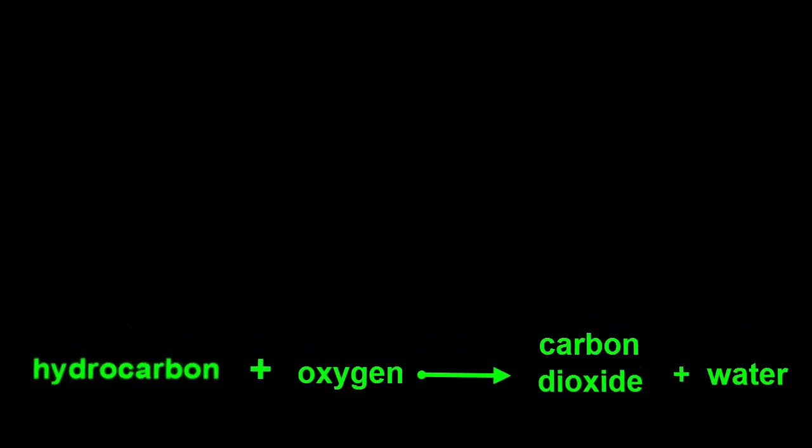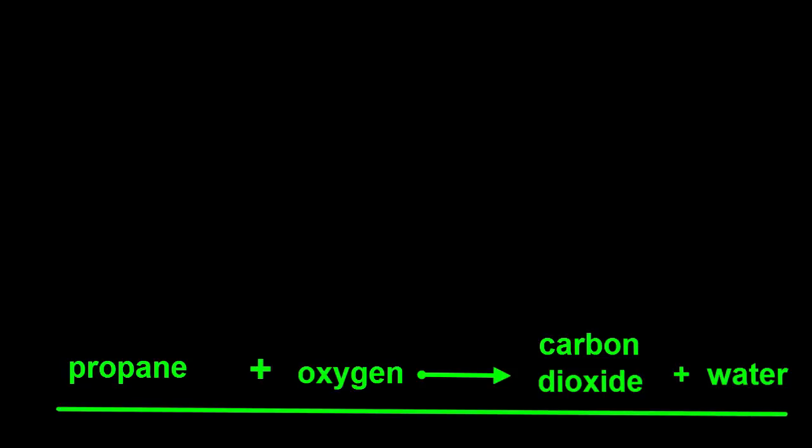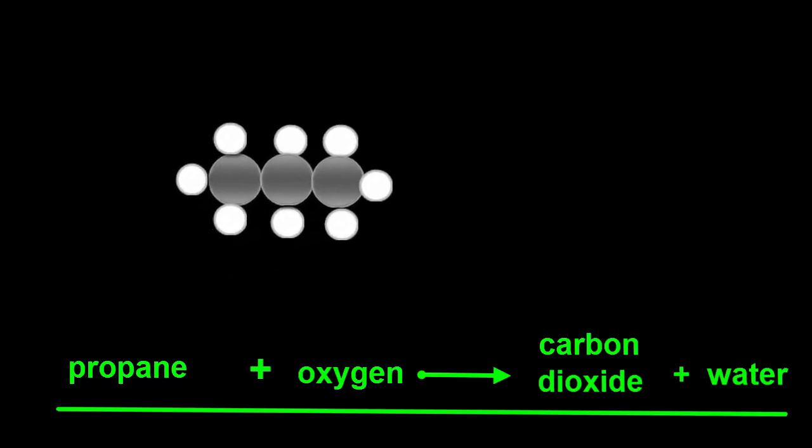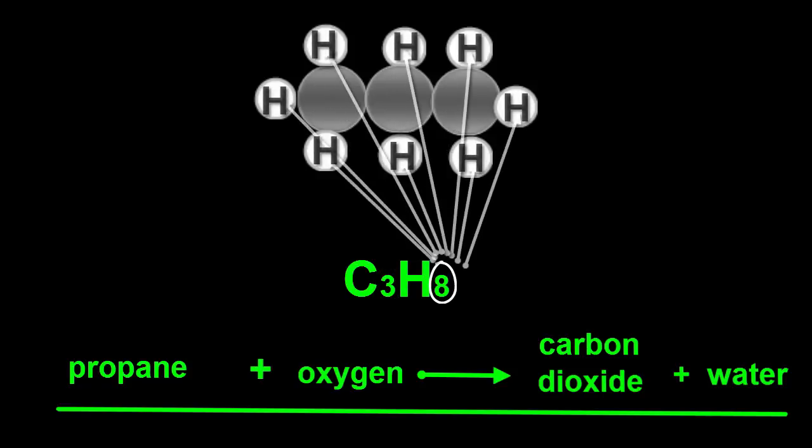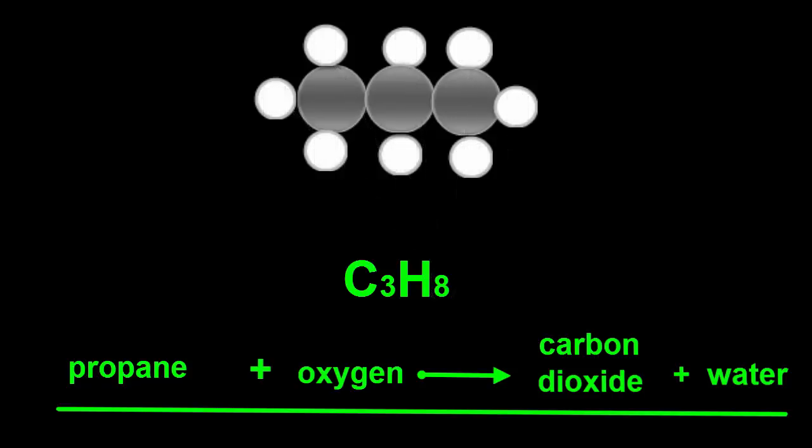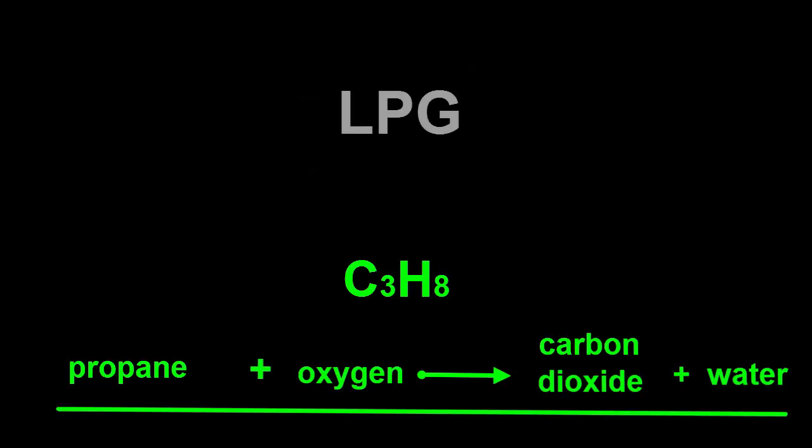Another hydrocarbon is propane. It burns to produce carbon dioxide and water too. Propane's molecule contains three carbon atoms and eight hydrogen atoms, so its formula is C3H8. It's a common gas fuel used in barbecues and kitchen stoves, and is often called LPG.